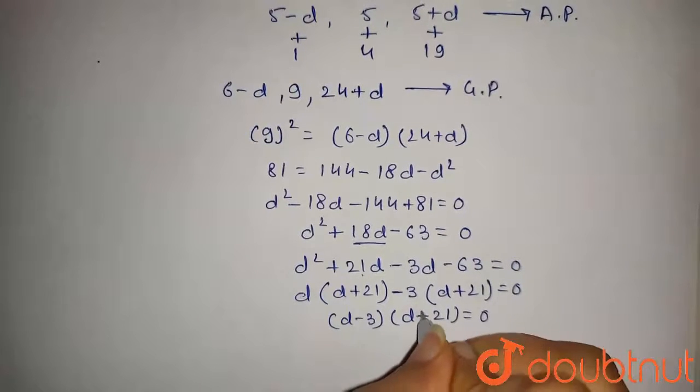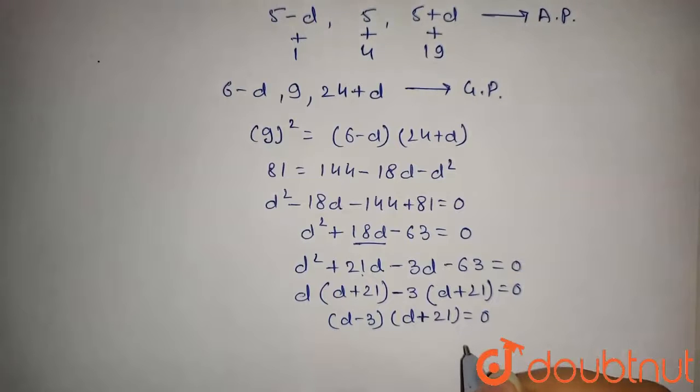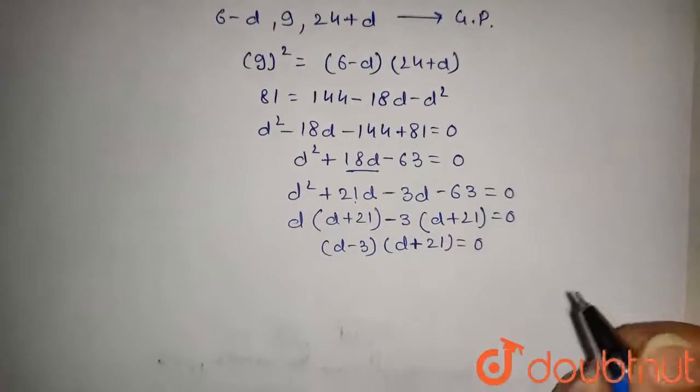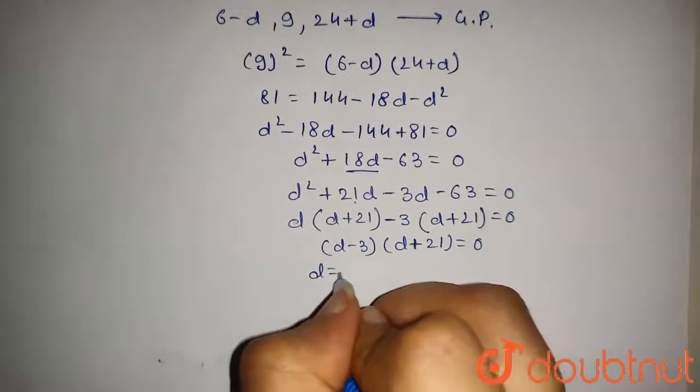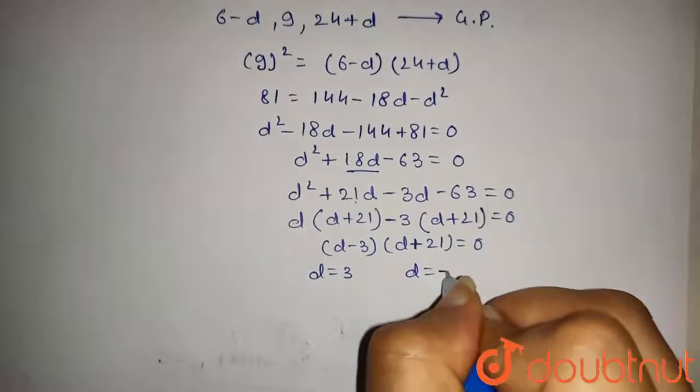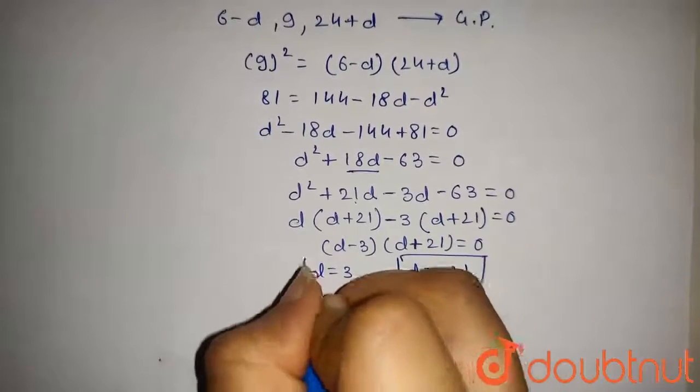On solving this, we get D equals 3 and D equals minus 21. So these are the two values of D.